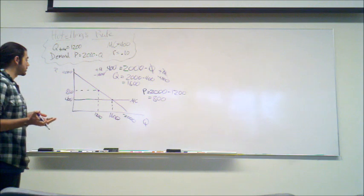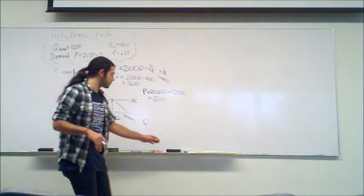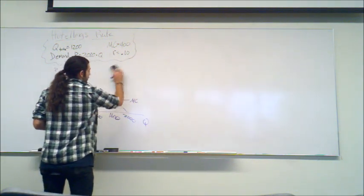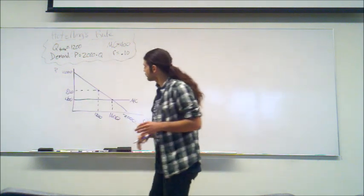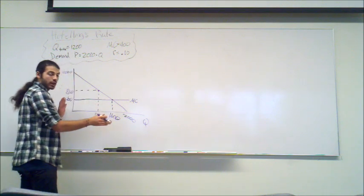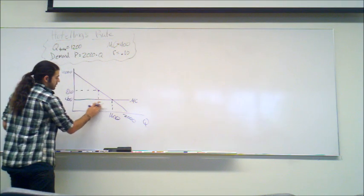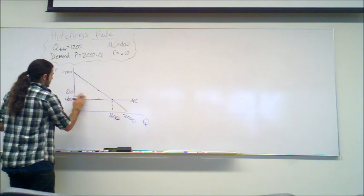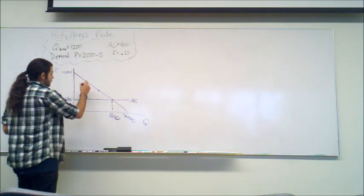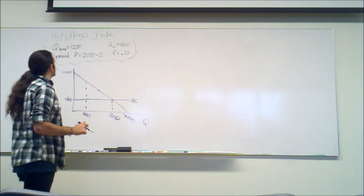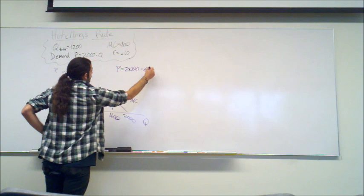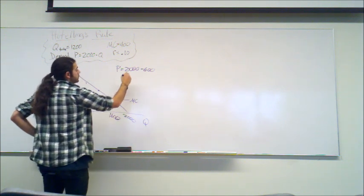However, say we could extract this amount of units over two time periods — ignoring the interest rate for now. If we extract half each time period and we have 1,200 units, then we would extract 600 units in each period, and our price would be $2,000 minus 600, which is $1,400.